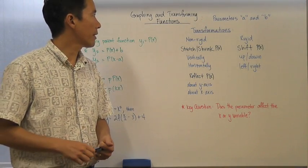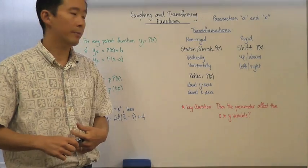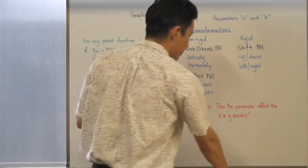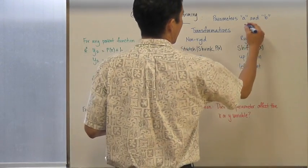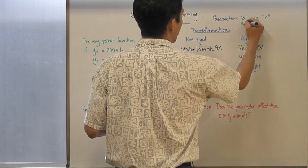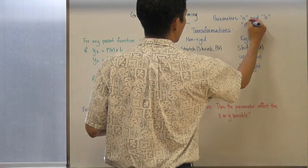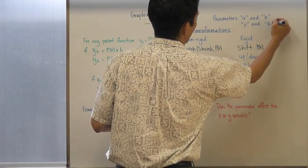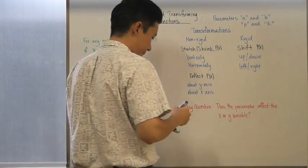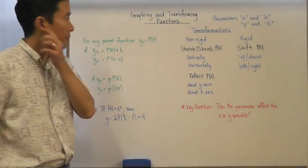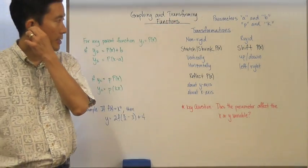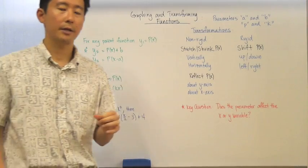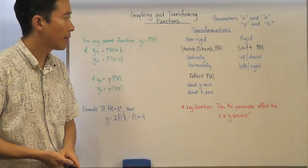Let's go ahead and take a look at graphing and transforming functions. We're going to look at the parameters A, B, P, and K. Now, if we take a look at transformations, let's make sure that we have a clear understanding of what types of transformations we have.